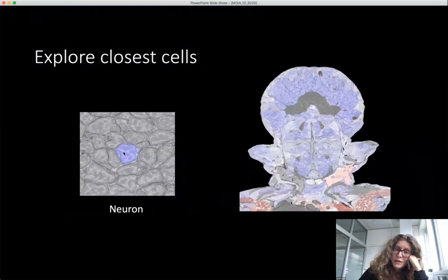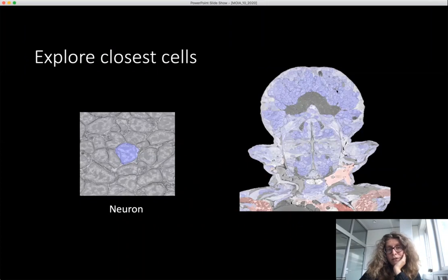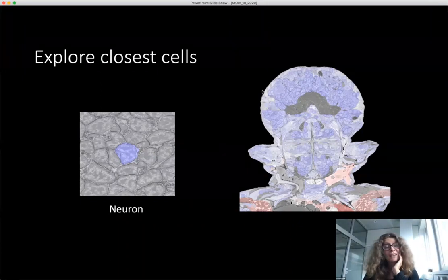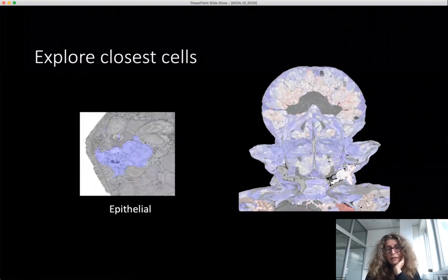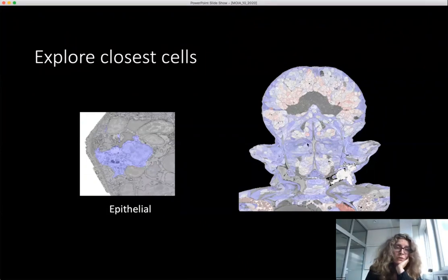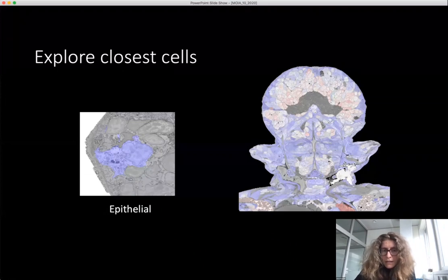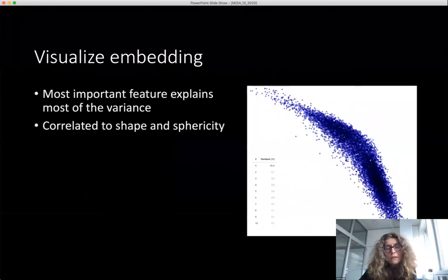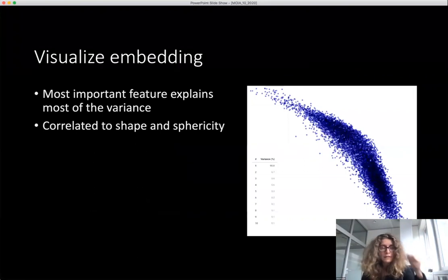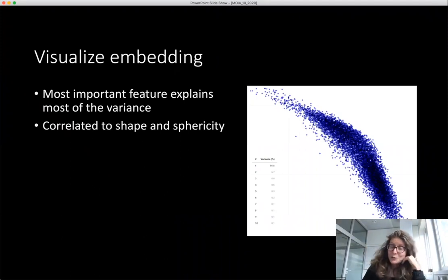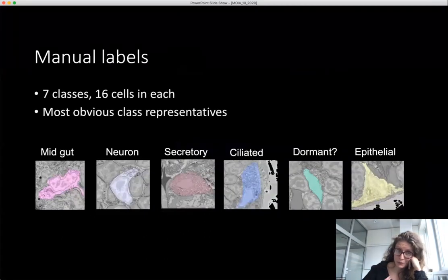Qualitative validation: take a known neuron and find closest cells in representation space — mostly neurons, but some non-neurons. Take an epithelial cell — mostly epithelial but some muscles mix in. This approach is starting to understand something but not fully. Looking at what it learned, there is essentially one dominant feature strongly correlated to sphericity. So it was going somewhere but we wanted to go further.